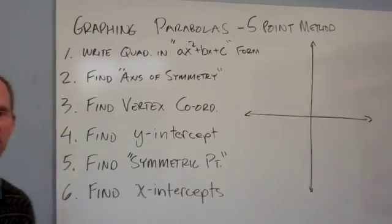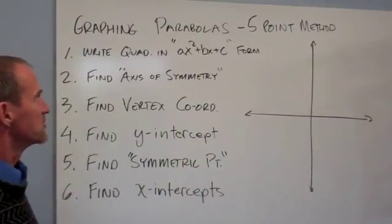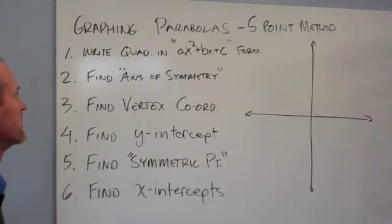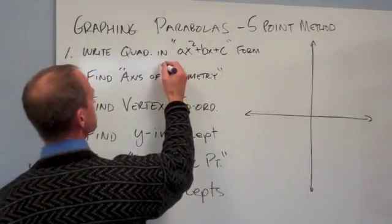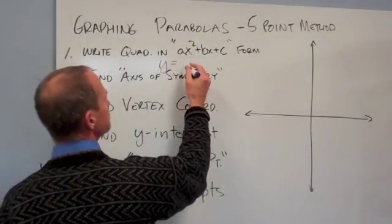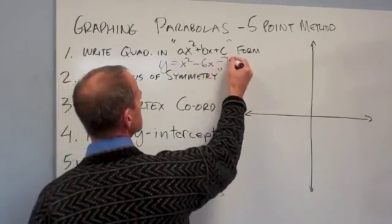Okay, hey there everyone, we are graphing quadratic equations using what's called the five-point method. It's pretty straightforward, I'll take you through it step by step. You can maybe pause that and write down those as notes, I'll be adding to them a little bit. Alright, so if we have an equation, let's say it's y equals x squared minus 6x minus 7.